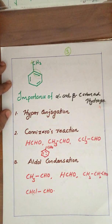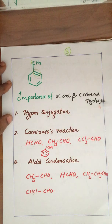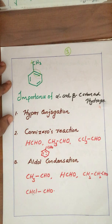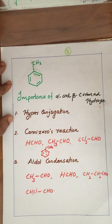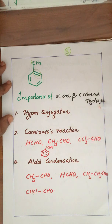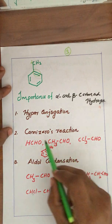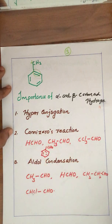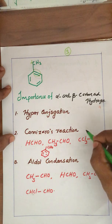Hyperconjugation is a very important factor. Hyperconjugation is possible only if there is an alpha hydrogen. I will give you a detailed discussion on hyperconjugation in a new video. Similarly, you may have heard about the Cannizzaro reaction — the Cannizzaro reaction is possible only if there is no alpha hydrogen atom in the molecule.